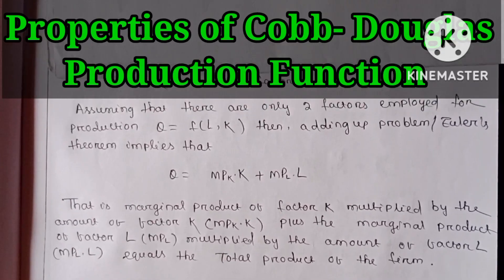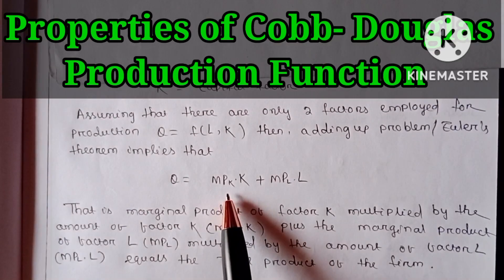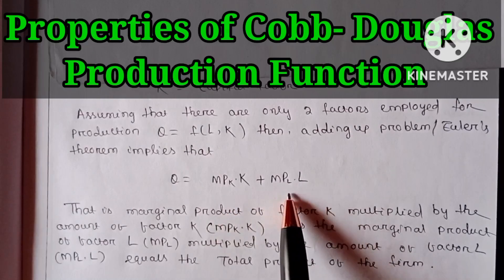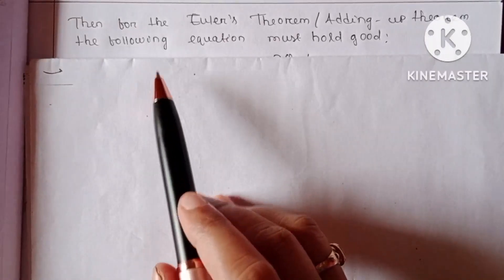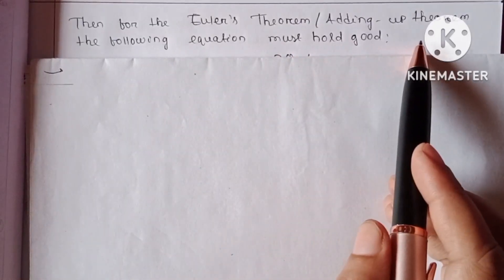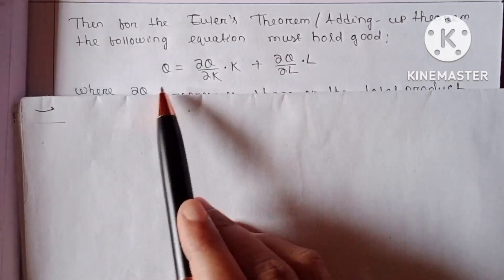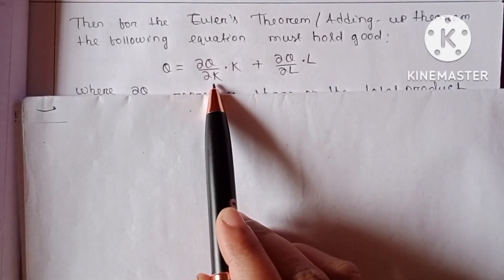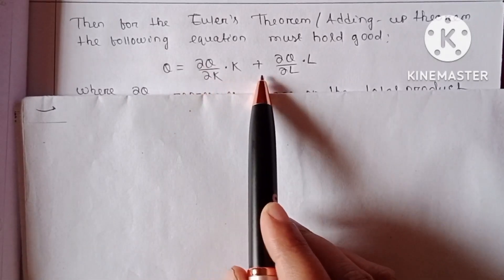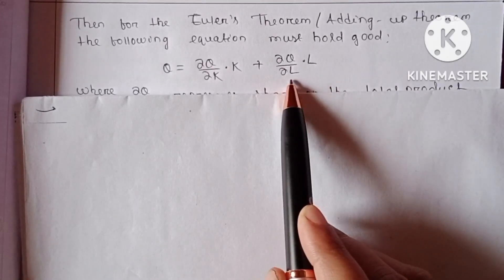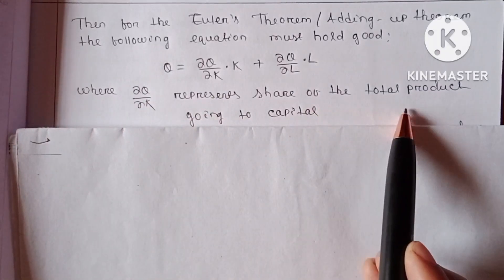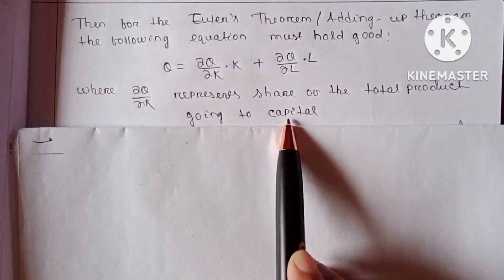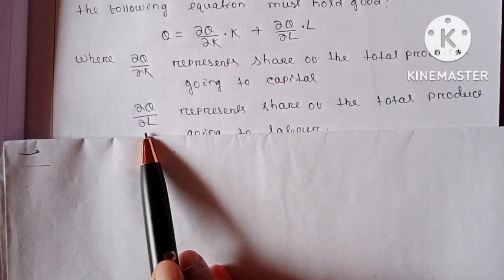The marginal products can be expressed as partial derivatives. MPK is written as delta Q by delta K, and MPL is written as delta Q by delta L. Hence, for Euler's theorem or the adding-up theorem, the equation Q = (delta Q / delta K)·K + (delta Q / delta L)·L must hold, where delta Q by delta K represents the share of total product going to capital and delta Q by delta L represents the share going to labor.